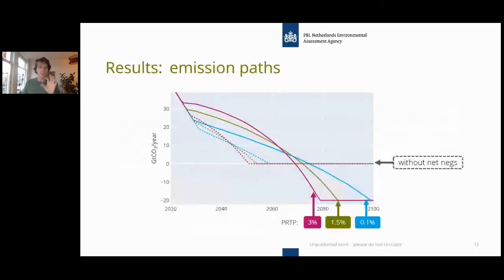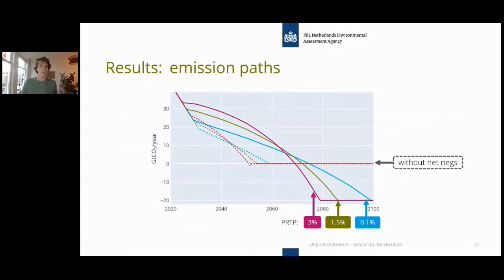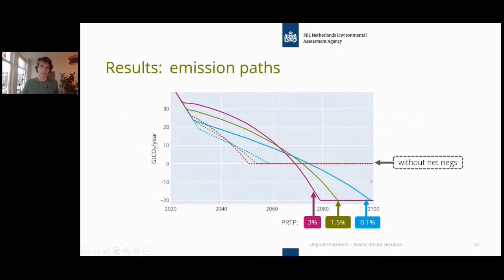Looking at the optimal emission paths under these two assumptions: the solid lines allow net negative emissions and dotted lines do not. The dotted lines require more mitigation early on. We include different discount rates—the pure rate of time preference. With a high discount rate of 3%, you go much more into net negative emissions because you wait longer before reducing emissions. With a low discount rate, there are still some negative emissions, but already much less than in the high discount rate case.